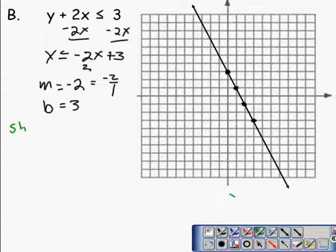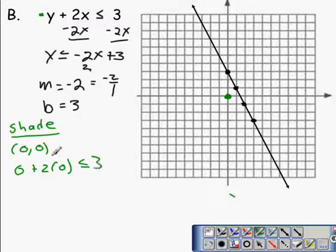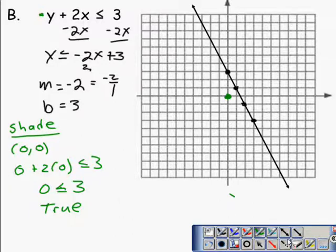So now we have our line drawn in. We need to determine which side of the line to shade. This line does not go through the point 0, 0, so we'll choose that point. See if it makes the original inequality true. 0 plus 2 times 0 is supposed to be less than or equal to 3. This left side does evaluate to 0, which is less than or equal to 3. So the point 0, 0 is a solution because it makes the original inequality true. Therefore, we're going to shade the side of the half plane on the side of the point 0, 0.